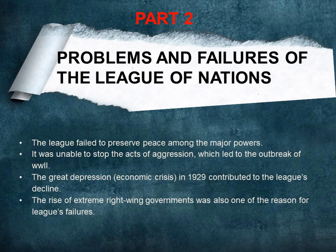The League was unable to stop serious acts of aggression in the interwar period — the period between World War I and World War II — and this failure basically contributed to the outbreak of the Second World War. The World Economic Crisis, which began in 1929, contributed to the League's decline, bringing unemployment, fear, and falling living standards, and caused extreme right-wing governments to come to power in Japan, Germany, and Italy. In Germany there was Adolf Hitler and in Italy there was Benito Mussolini.